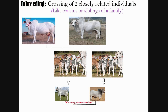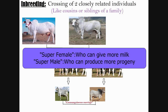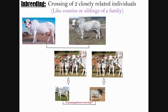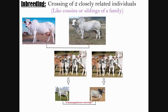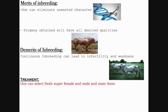In inbreeding, a super female and super male are selected. A super female is the female with the capability of producing more milk, and a super male is the male which can produce more progeny. Both are crossed and the progeny is observed. From the same progeny, super female and super male are again selected and bred from the same generation.